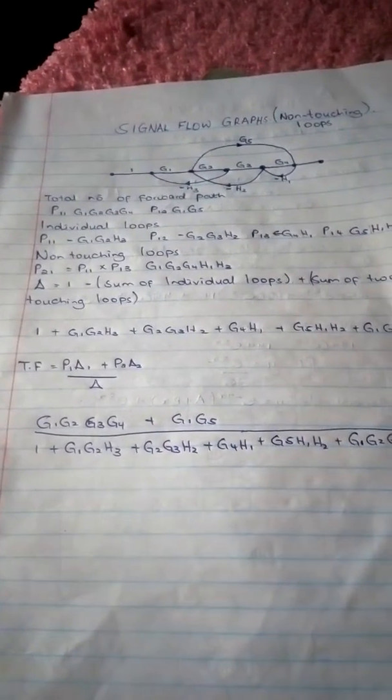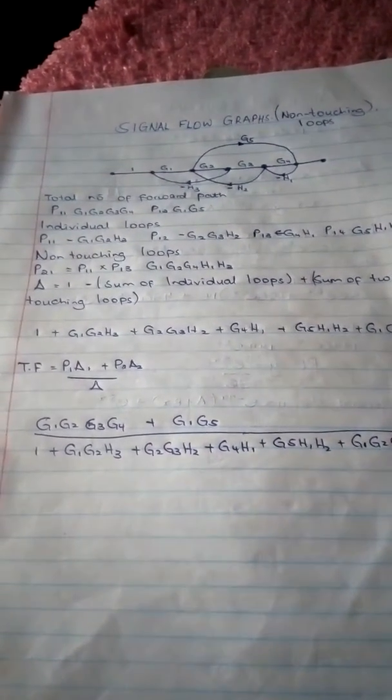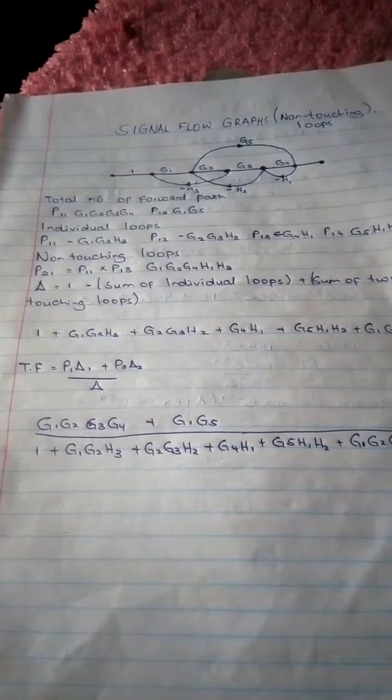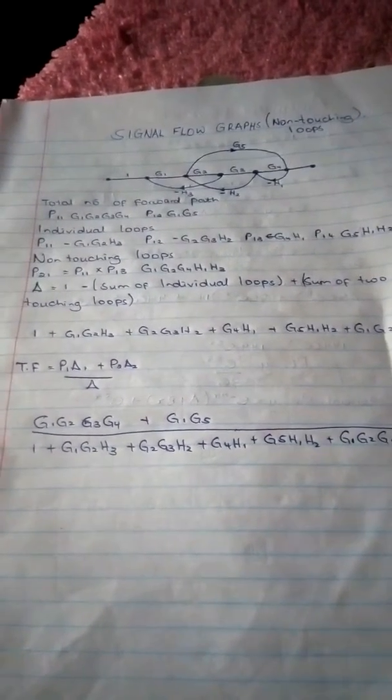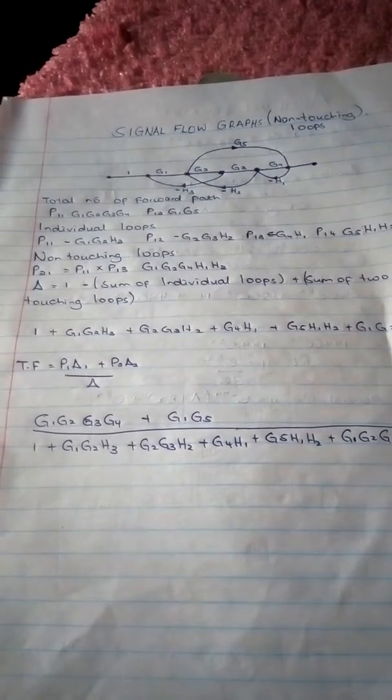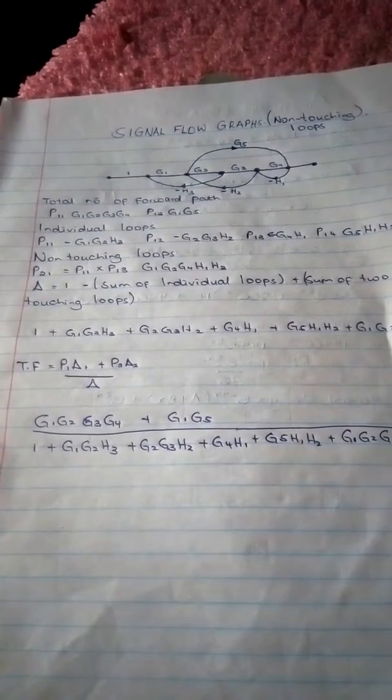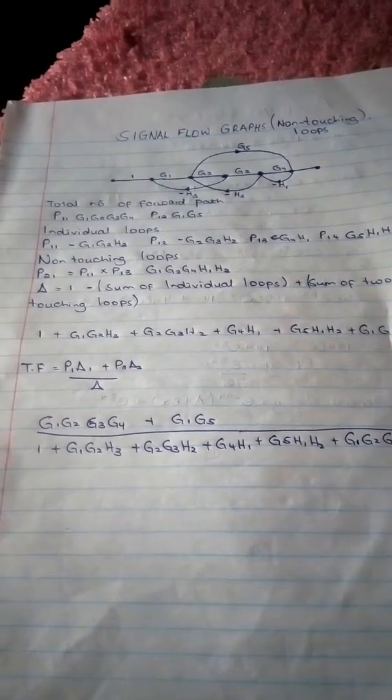Signal flow graphs are found in control and instrumentation. Today we are going to deal with non-touching loops, particularly how to get the transfer function for non-touching loops.